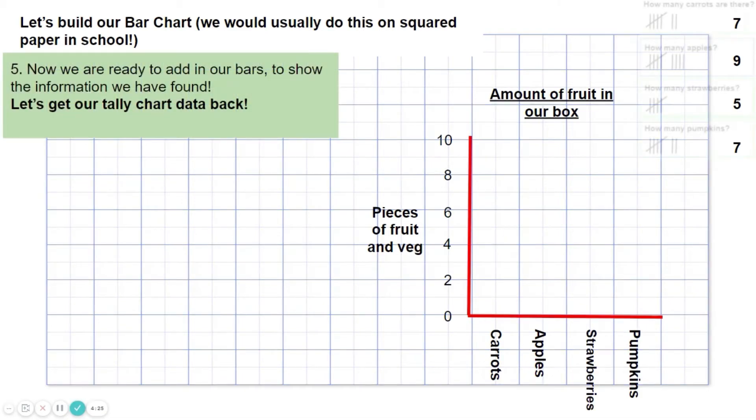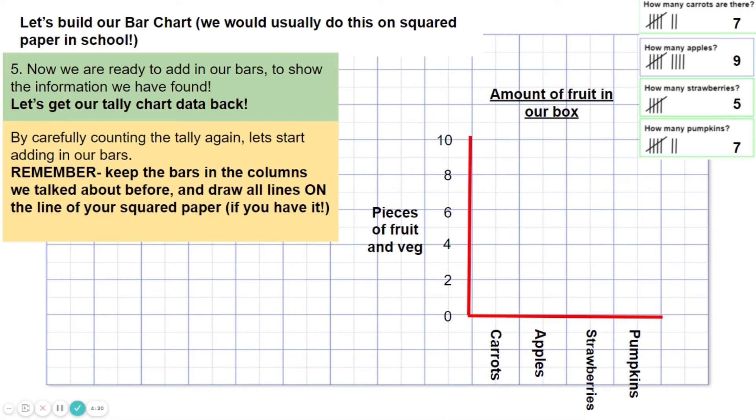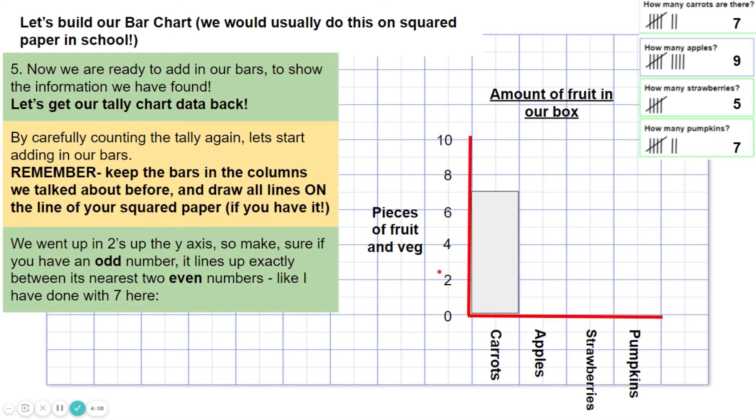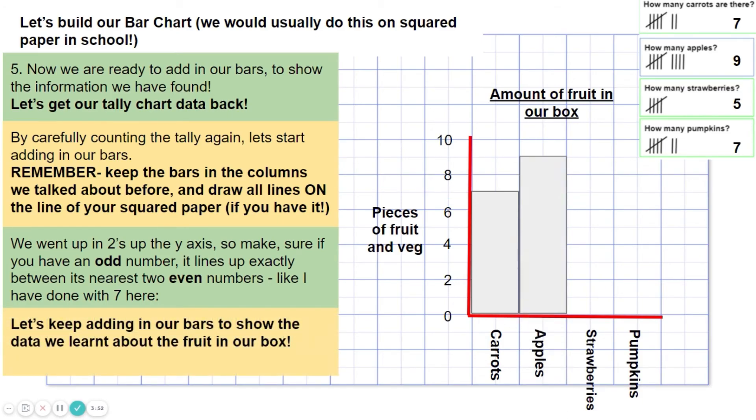So next, we are ready to add in our bars. To show the information we have found, let's get our tally chart data back. By carefully counting the tally again, let's start adding in our bars. Remember, keep the bars in the columns we talked about before and draw all lines on the line of your squared paper if you have it. It's really important to draw on the lines and make it really neat. It's much easier to understand then. Here we are. We went up in twos up the y-axis. So make sure if you have an odd number, it lines up exactly between its nearest two even numbers. So here, we've got a seven. So it's right between six and eight there.